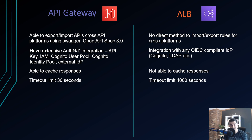API Gateway has a timeout limit of 30 seconds for API execution, while Application Load Balancer has a much longer timeout limit of 4,000 seconds.